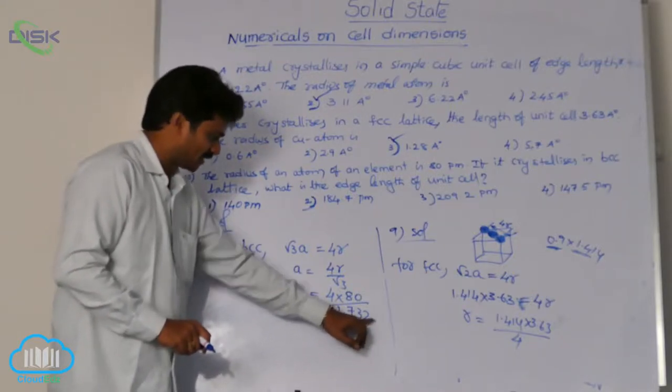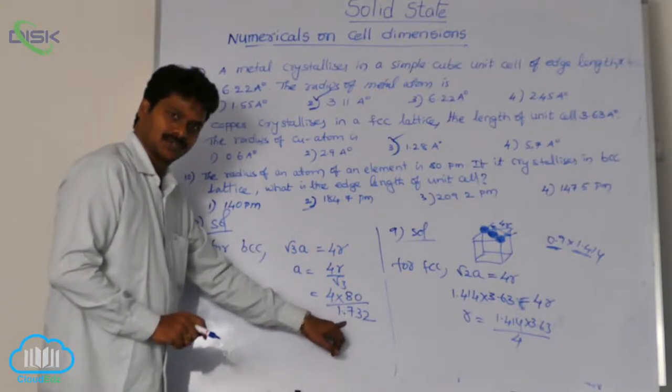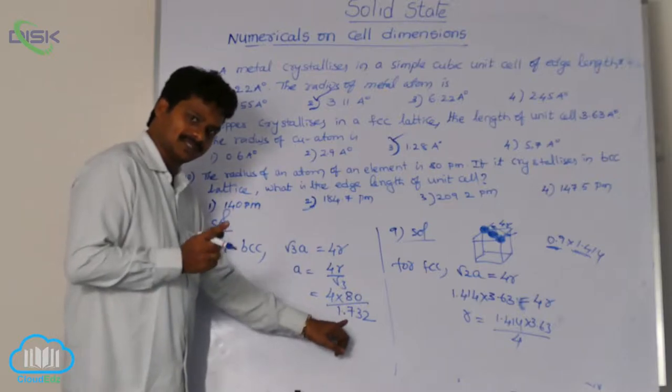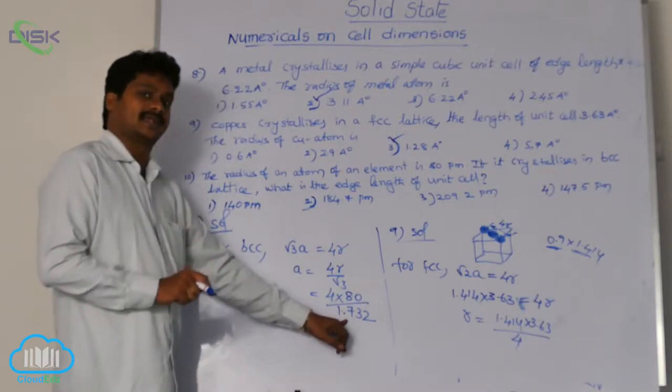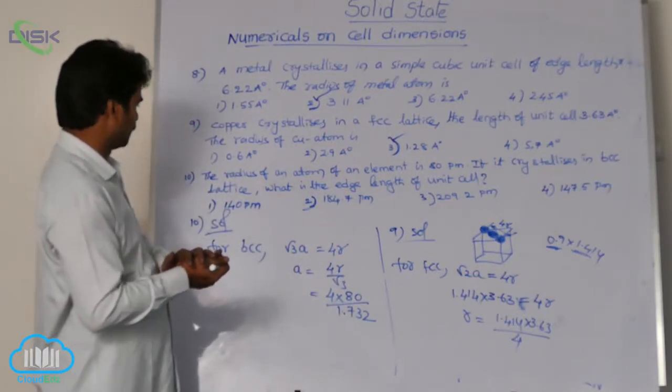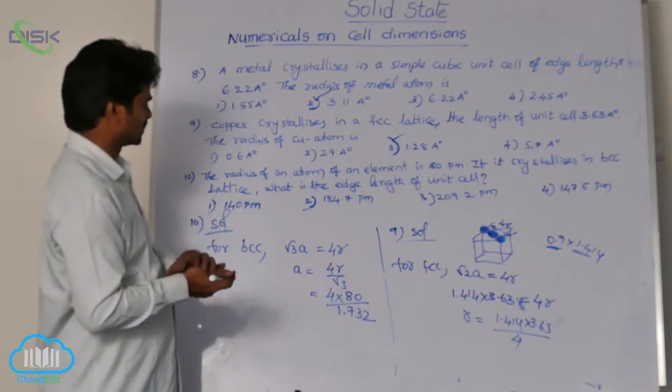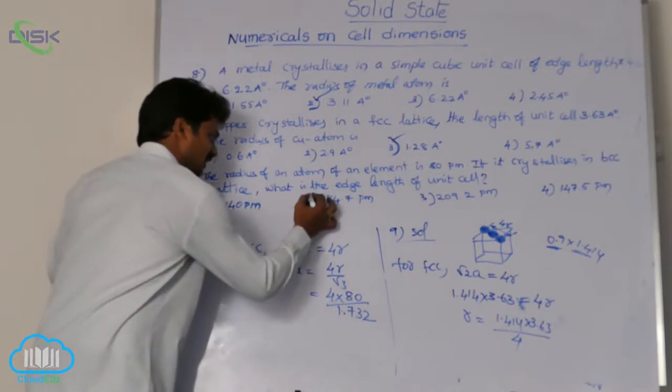That means it is in the denominator. In the denominator, less than 2 is there. So the answer will be more than 160, slightly more than 160. Which is having slightly more than 160? Yes, this 184.7.